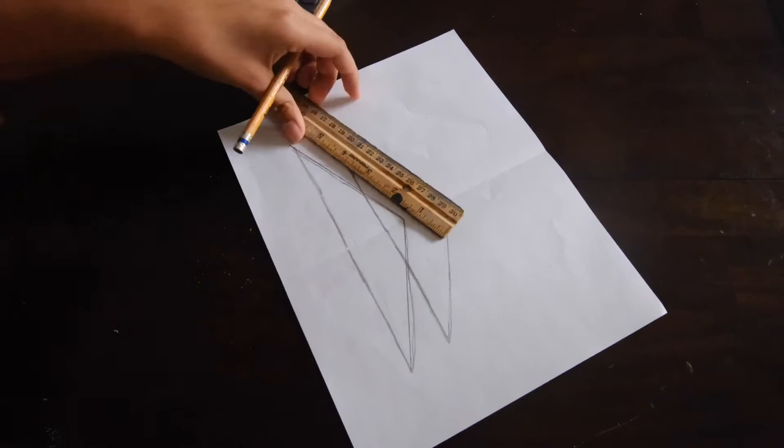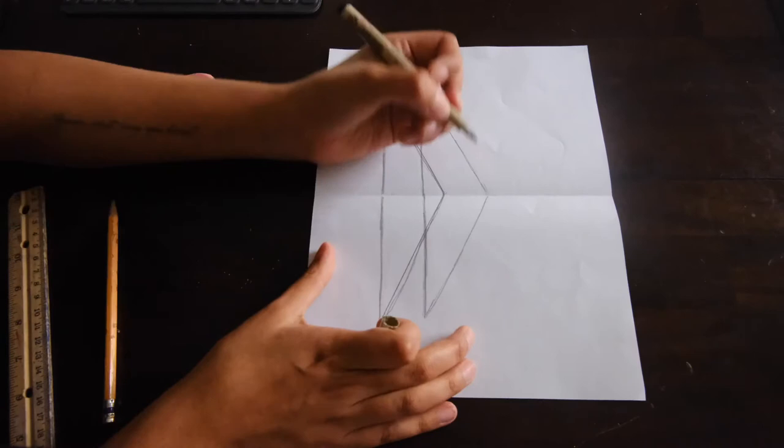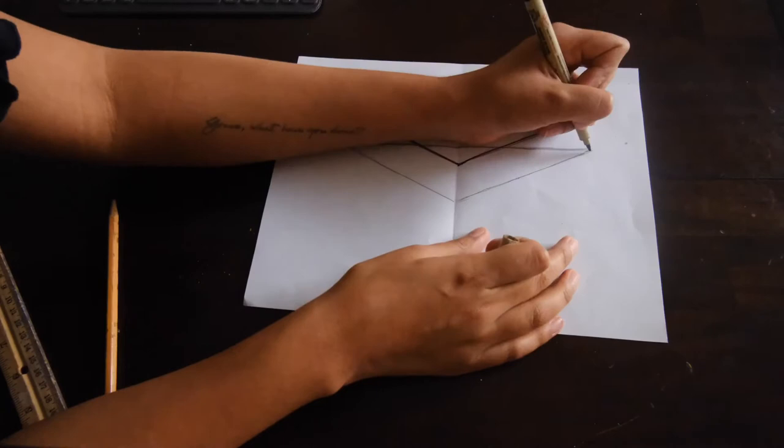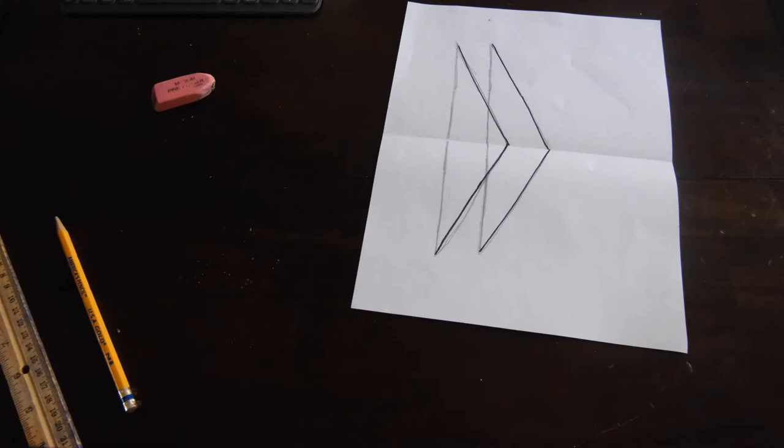Since I started with pencil on my drawing first, I am now going to go over my lines with a marker and follow the straight lines I created with my ruler. I'm going to try my best to make it as straight as I can just so it could help better the illusion we're trying to create.